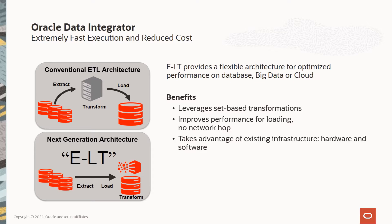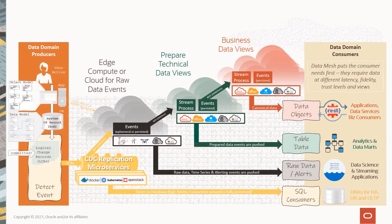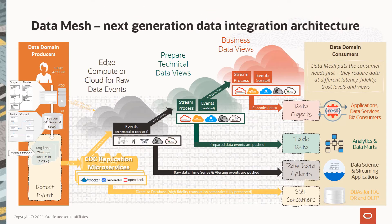Did you know that Forrester and Gartner rank Oracle as a leader in the data fabric and data mesh market? Data mesh is the next generation of data integration architecture with two primary characteristics: it's a real-time, event-driven architecture, and it uses data products to deliver data to end users in the form they desire.